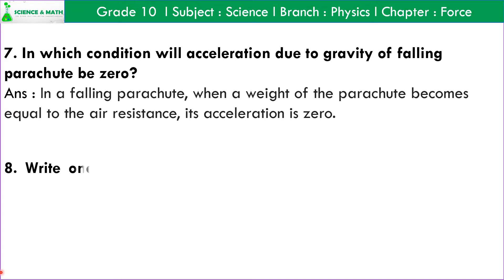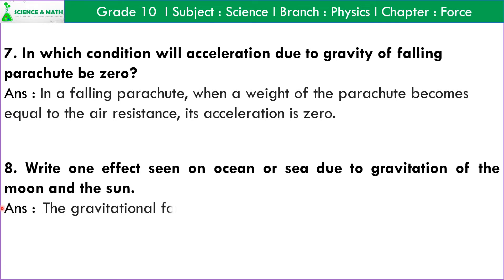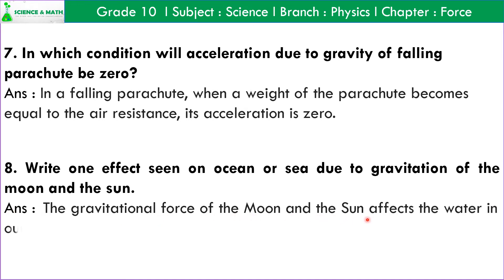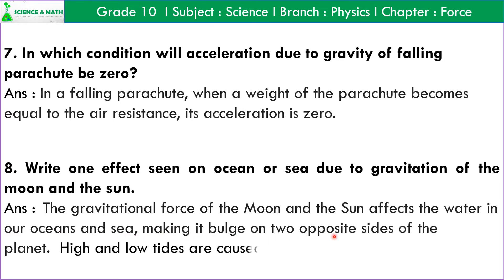Question number 8: Write one effect seen on ocean or sea due to gravitation of the moon. Answer: The gravitational force of the moon and the sun affects the water in our oceans and seas, making it bulge on two opposite sides of the planet. High and low tides are caused by the moon.